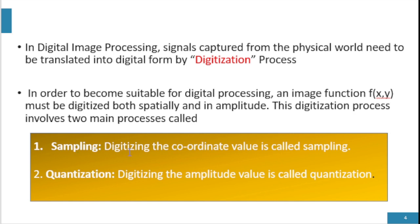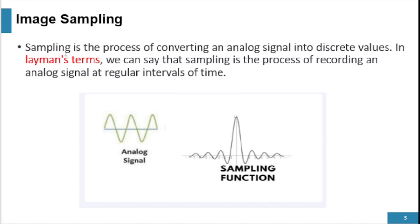Digitalizing the coordinate values is called sampling, and digitalizing the amplitude values is known as quantization. Image sampling is a process of converting an analog signal into discrete values — the process in which we divide the continuous signal into discrete values or intervals is called sampling. In layman's terms, sampling is a process of recording an analog signal at regular intervals of time. In this image we can see the difference: the analog signal varies continuously with time, while the sampling function divides the signals into a discrete manner with different values at each interval.